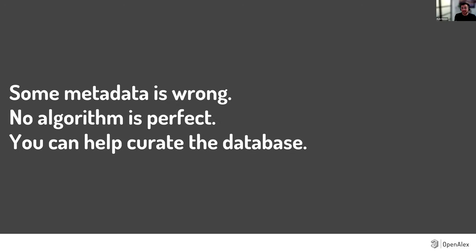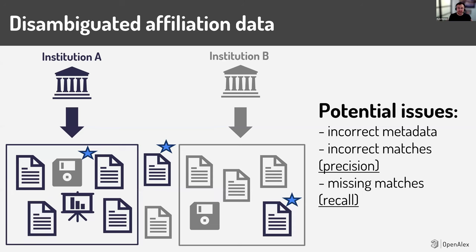The way we thought about this was: what could potentially be causing the issues, and how can we identify and resolve them? If you imagine institution A and institution B with their works color-coded, you can imagine if we've drawn a box around six works, five of them should have been at that institution and one was wrong — that's a precision error, wrongly matched. And there are recall errors where we haven't attributed a work to anything, and we need it to go to that institution — or where it's been mapped to the wrong institution. So we spent a lot of time thinking about precision and recall, but also around incorrect metadata.